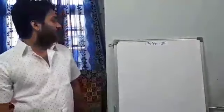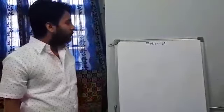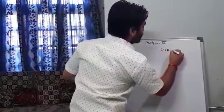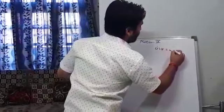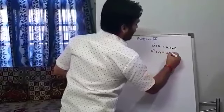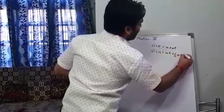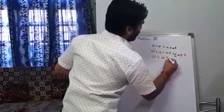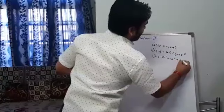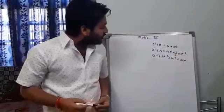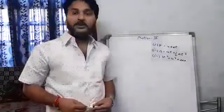Good morning class. Till yesterday we have proved all the three equations of motion. The first equation was V equals to U plus AT, the second equation is S equals to UT plus half AT squared, and the third equation is V squared equals to U squared plus 2AS. These three equations we have proved with the graphical method.